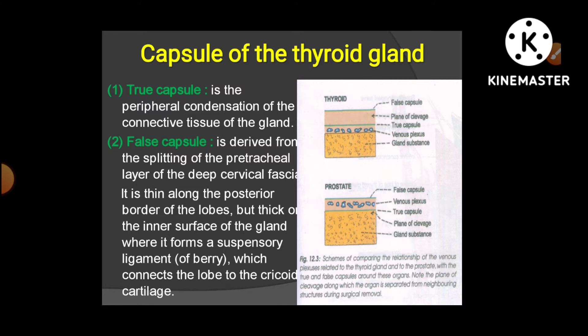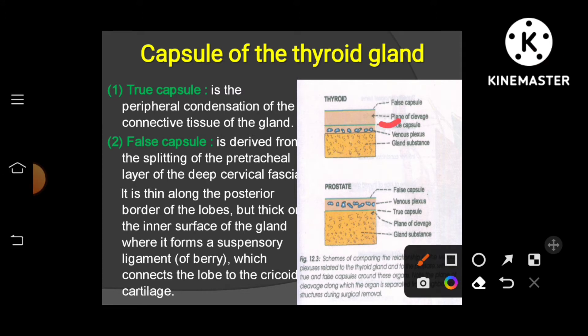The thyroid gland has two capsules — true and false. The true capsule is a peripheral condensation of the connective tissue of the gland — the connective tissue at the periphery thickens and condenses to form the true capsule. The false capsule is derived from the pretracheal layer of the deep cervical fascia, which encircles the thyroid gland and trachea. The false capsule is thin along the posterior border of the lobe but thick over its inner surface.